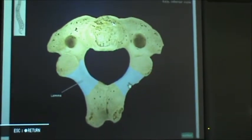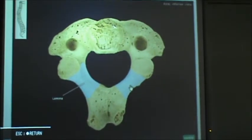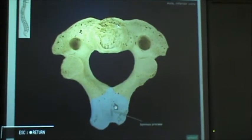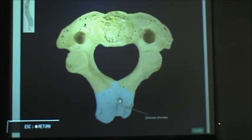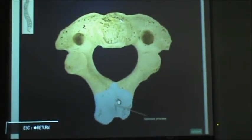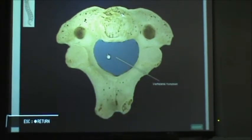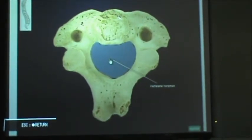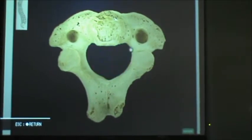Here's our lamina. And then here's our spinous process — it's now on the bottom. In the middle is our vertebral foramen.